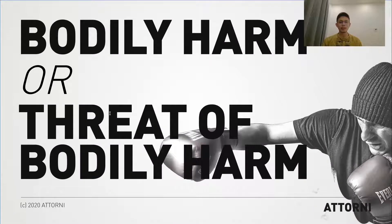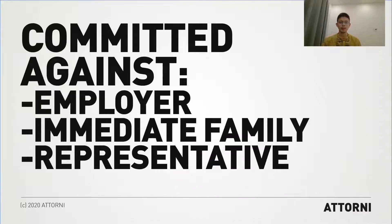A crime against the person simply means a crime or offense which involves bodily harm or threat of bodily harm. Third, the crime is committed against either the employer, his immediate family, or his authorized representative.